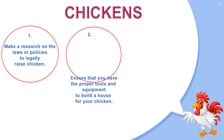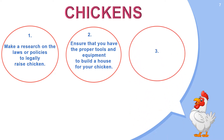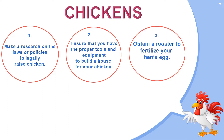Second, ensure that you have the proper tools and equipment to build a house for your chicken. The chicken coop must be spacious enough if you plan to grow your flock. Third, obtain a rooster to fertilize your hen's eggs. A rooster is an adult male domesticated chicken. The rooster must be in its prime breeding condition, should come from a good breeding stock, and you should have one rooster for every 10 hens.